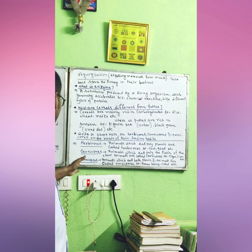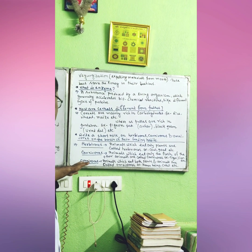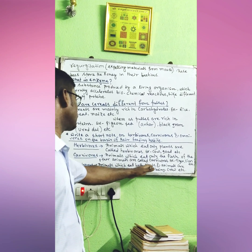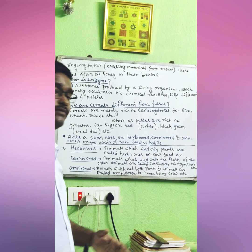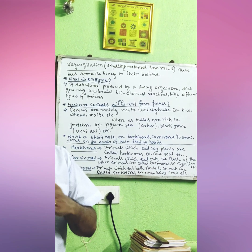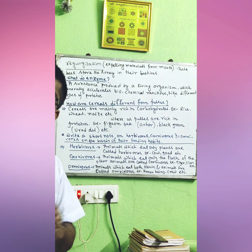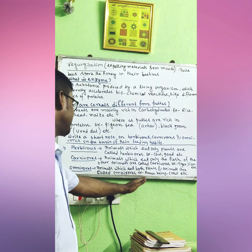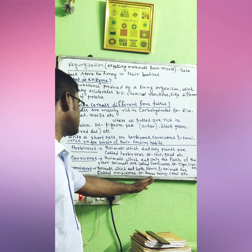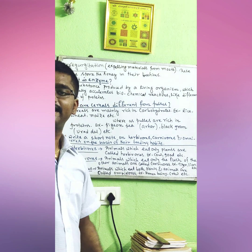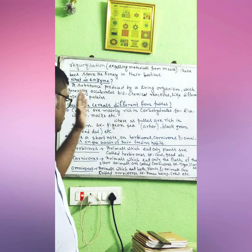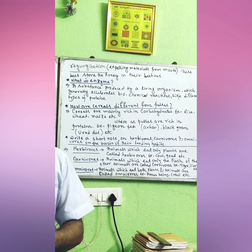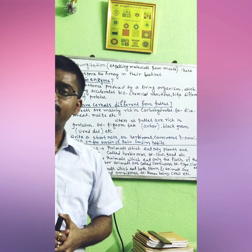Omnivores are animals which eat both plants and animals — examples include human beings and crows. All main keywords of this chapter have now been explained.